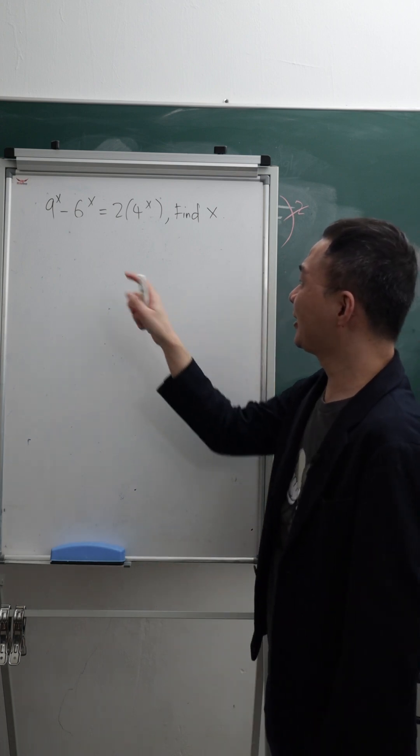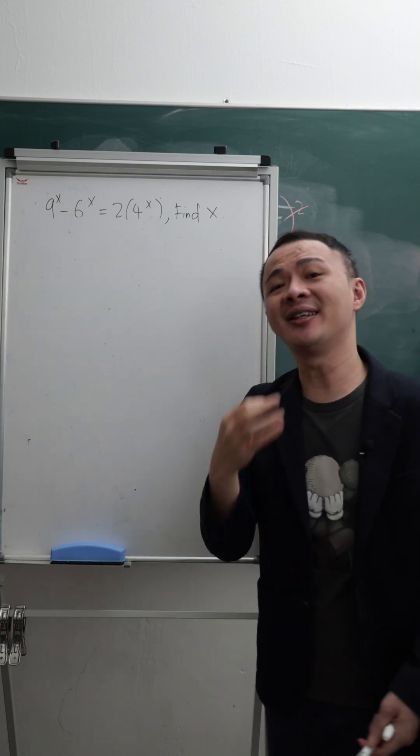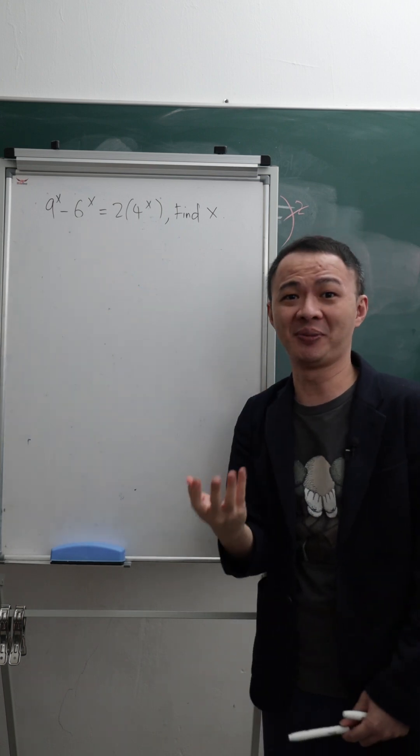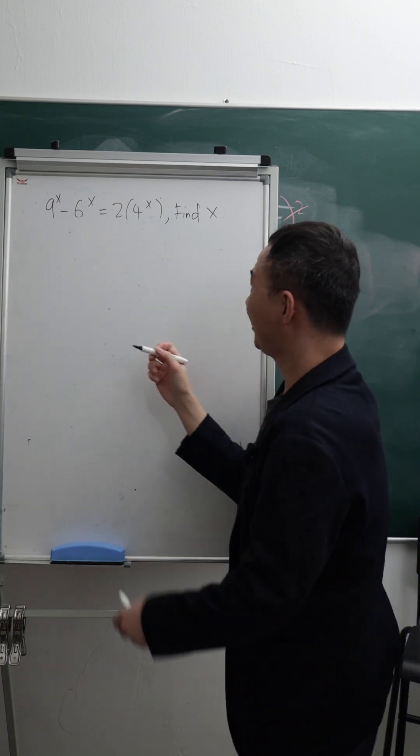So what I want to do is I will try to change everything into 2 and 3, because I can see 6 is basically 2 multiplied by 3. So this is what I will do.